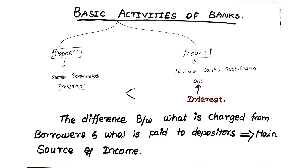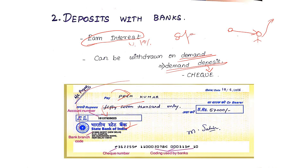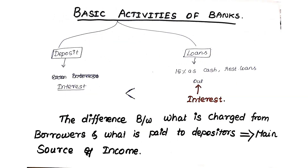Now let's see the function of a bank. The bank accepts people's deposits and also gives out loans. Banks pay interest on deposits. If you take a loan from the bank — say 10 lakhs or 5 lakhs — you pay interest on that loan. The bank acts as an intermediary between those who have surplus money and those who need money.